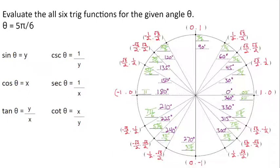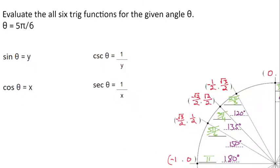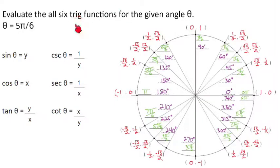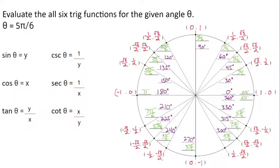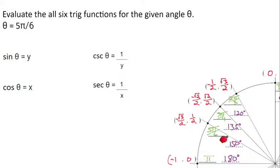Now let's find all six trig functions for a given angle theta. We're going to use 5π/6, which is in radians. We'll zoom in on 5π/6, identify the x and y coordinates, and work through the first four functions. For sine of theta, we're just looking at the y-coordinate of that point, which is 1/2.